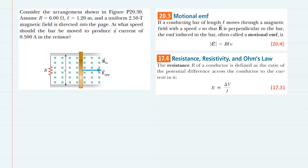In this question, in order to find the speed at which the bar should be moved to produce a current of 0.5 amps, we have to take advantage of a concept known as Motional EMF, which we have listed here in box 20.3.